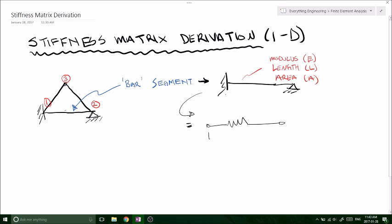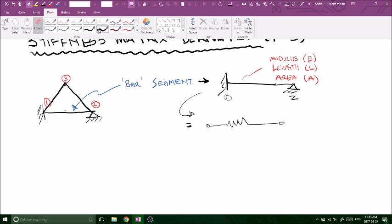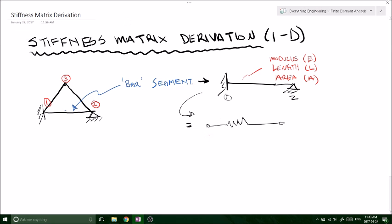And by node I mean some kind of connection, a hinge or a support, or anything that would disrupt or create some kind of discontinuity in our structure. So basically right here we've got a spring.